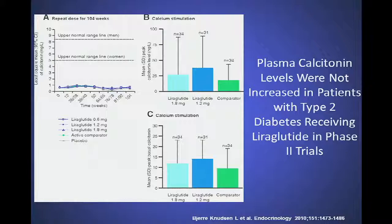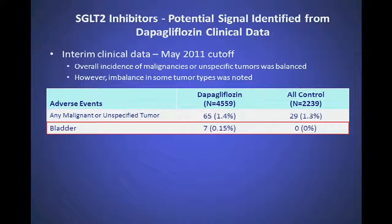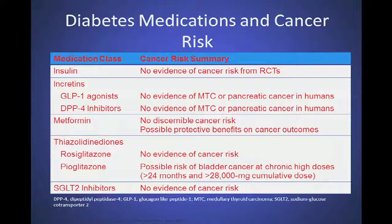Regarding GLP-1 agonists, the concern about rodent calcitonin elevation is not shown in humans - calcitonin levels remain essentially flat in trials, because GLP-1 receptors present in rodent C cells are not present in human cells. Regarding SGLT2 inhibitors, there was some suggestion of bladder cancer, but so far various agencies have suggested the data is not strong enough to conclude there is cancer induction. In summary: long-acting insulin appears fine, GLP-1 agonists and DPP-4 inhibitors are fine, metformin is actually potentially protective, and TZDs and SGLT2 inhibitors show no strong evidence of concern.